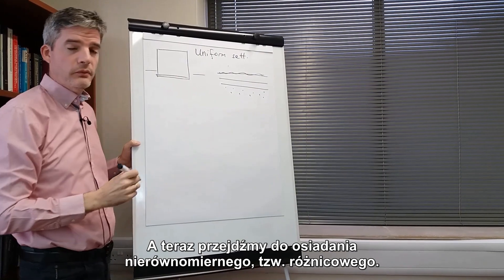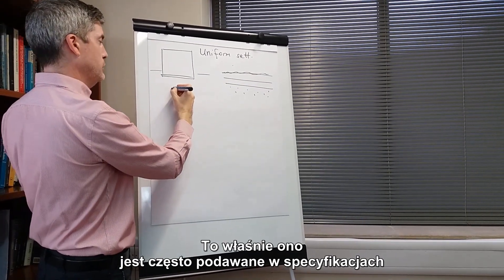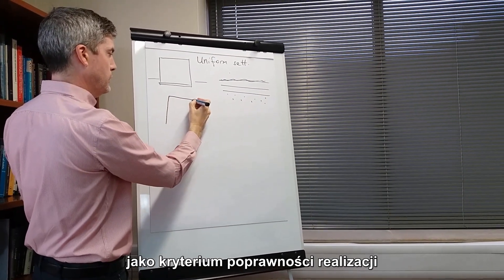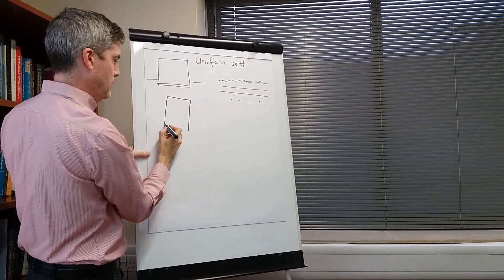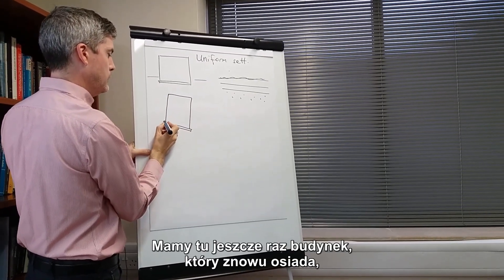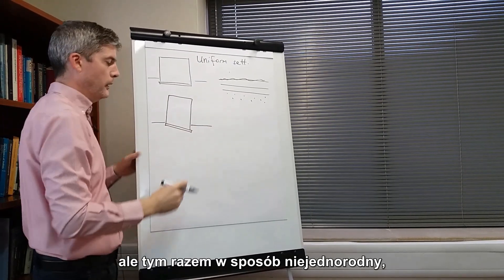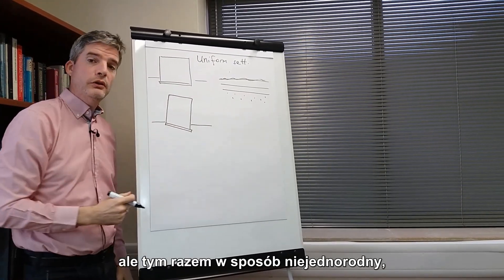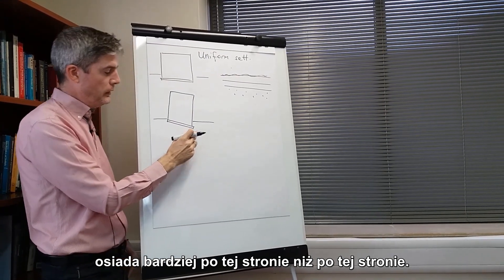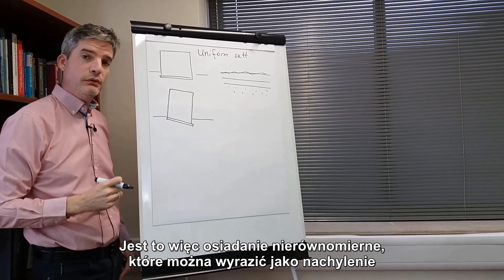Next, we come to differential settlement, and this is what is often quoted in specifications as a performance criterion. So here we have a building that has settled again, but this time not in a uniform way — it has settled more on this side than it has on this side. So that is a differential settlement.